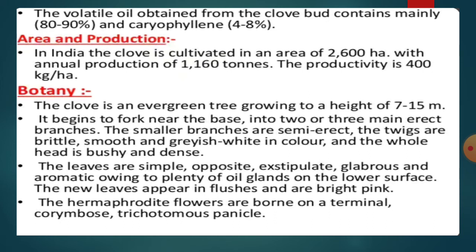The volatile oil obtained from the clove bud contains mainly eugenol at 80 to 90%, and caryophyllene at 4 to 8%.